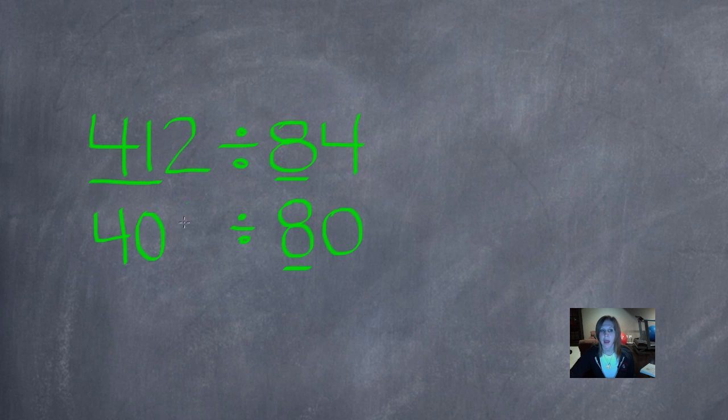So I'm going to write 40 below it, and then I'm going to change that 2 to a 0, just like when we were using compatible numbers in multiplication. So these are the numbers. That's the compatible number.